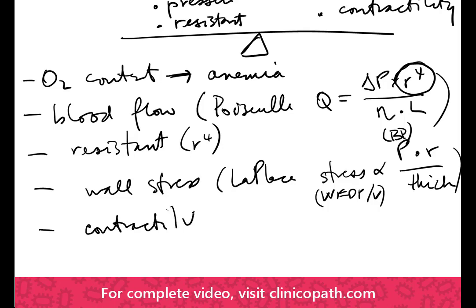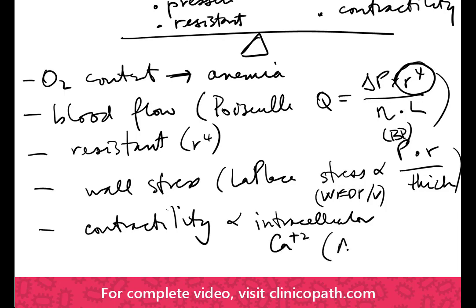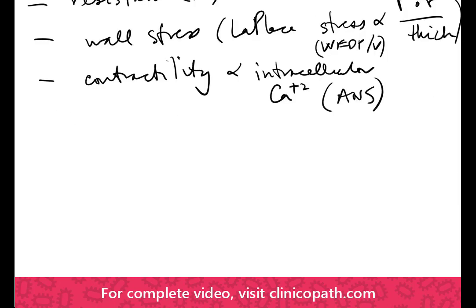Heart rate is self-explanatory. The other parameter we need to understand is contractility. Contractility is proportional to our intracellular calcium level and is highly driven by the autonomic nervous system — increasing with sympathetic input and decreasing with cholinergic input.